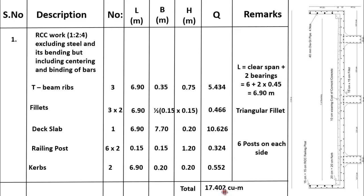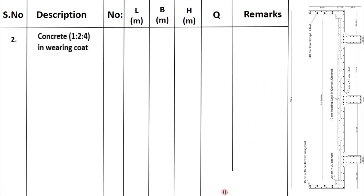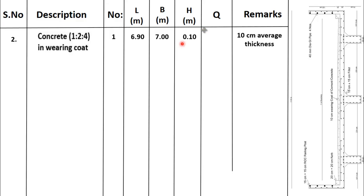We have calculated the first item of work — RCC work in 1:2:4 concrete. Now we will calculate other items of work, which includes concrete work in wearing coat. The wearing coat number is 1. Its length is 6.90 metres. Its width is 7 metres. Its thickness is 10 cm, which is the average thickness of this wearing coat. After multiplying all these quantities, the total quantity of concrete work in wearing coat is 4.83 cubic metres.